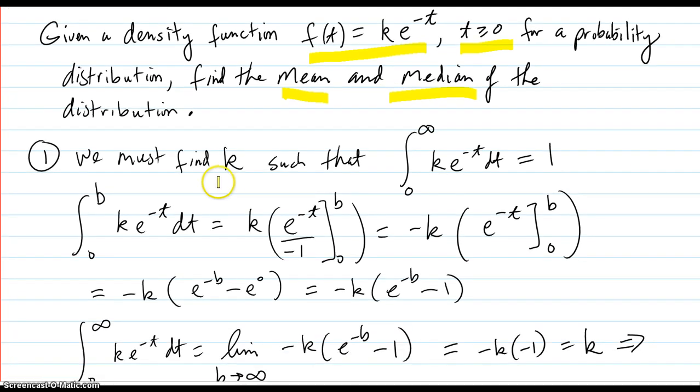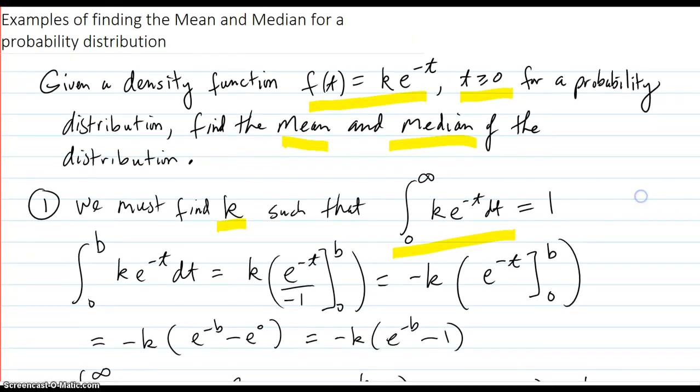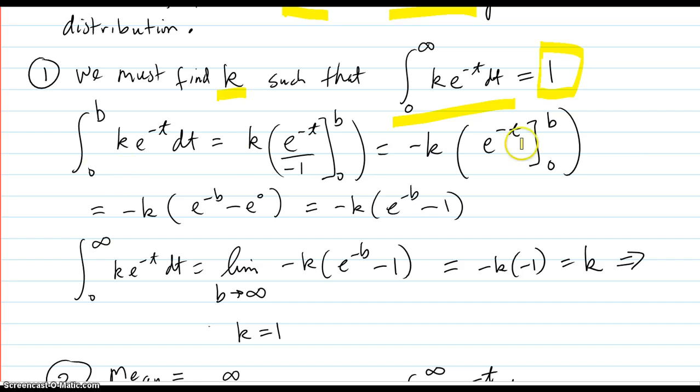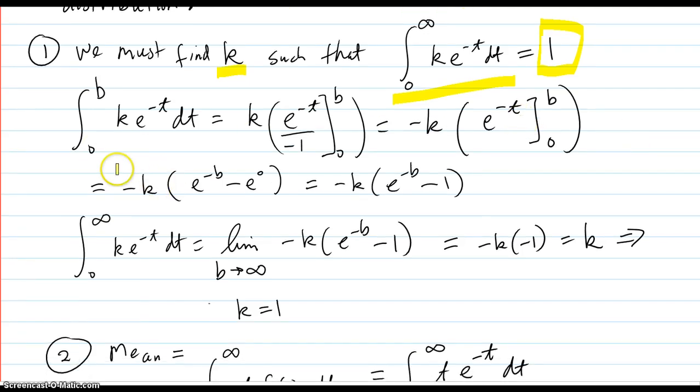First, we have to find k such that the area under the curve from zero to infinity, since we limited it to that, has to equal one, 100%. So you go through the whole integration process and you come up with this.